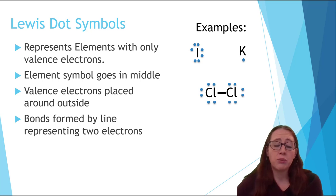When we want to represent a bond, we'll typically do that with a line. So each line represents two electrons. Let's see how the bonds are formed.